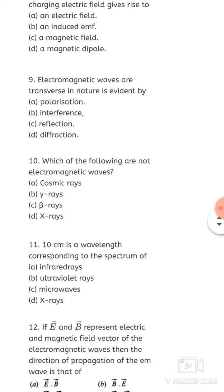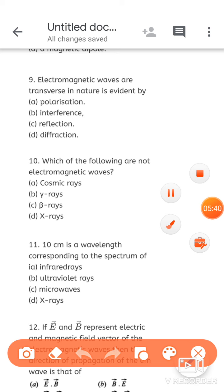Next, question 9: electromagnetic waves are transverse in nature — this is evident from what? The nature of EM waves was proven to be transverse through polarization. Your wave optics chapter is ongoing; when the topic of polarization comes, you will understand. The answer is polarization — that is the phenomenon which proved that EM waves are transverse in nature.